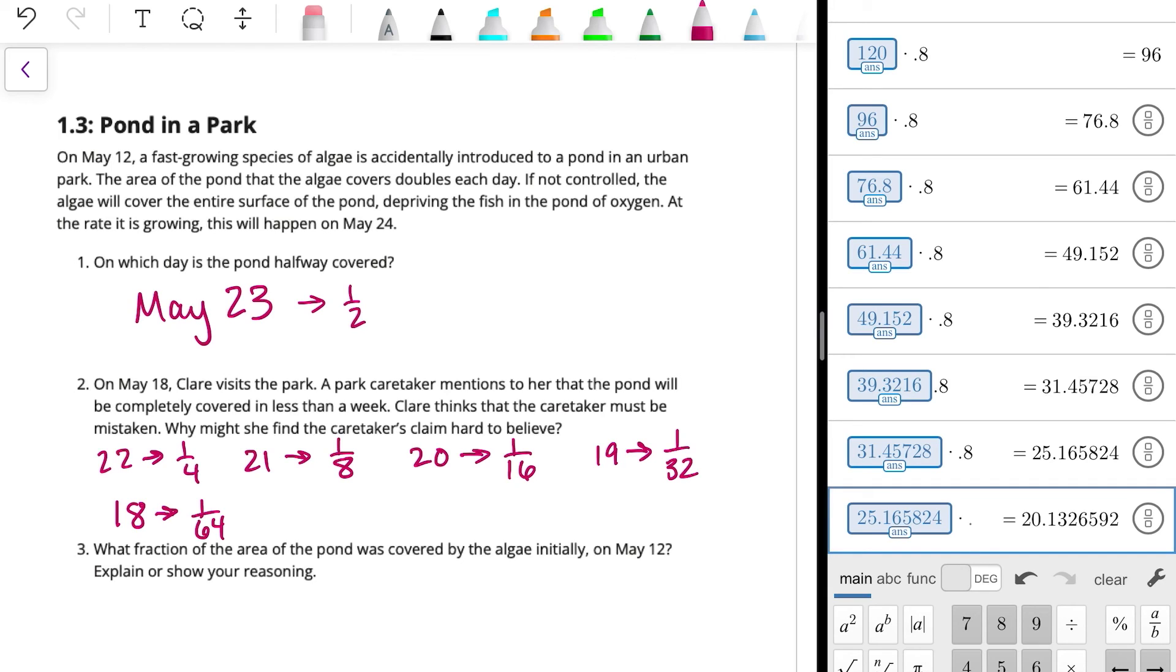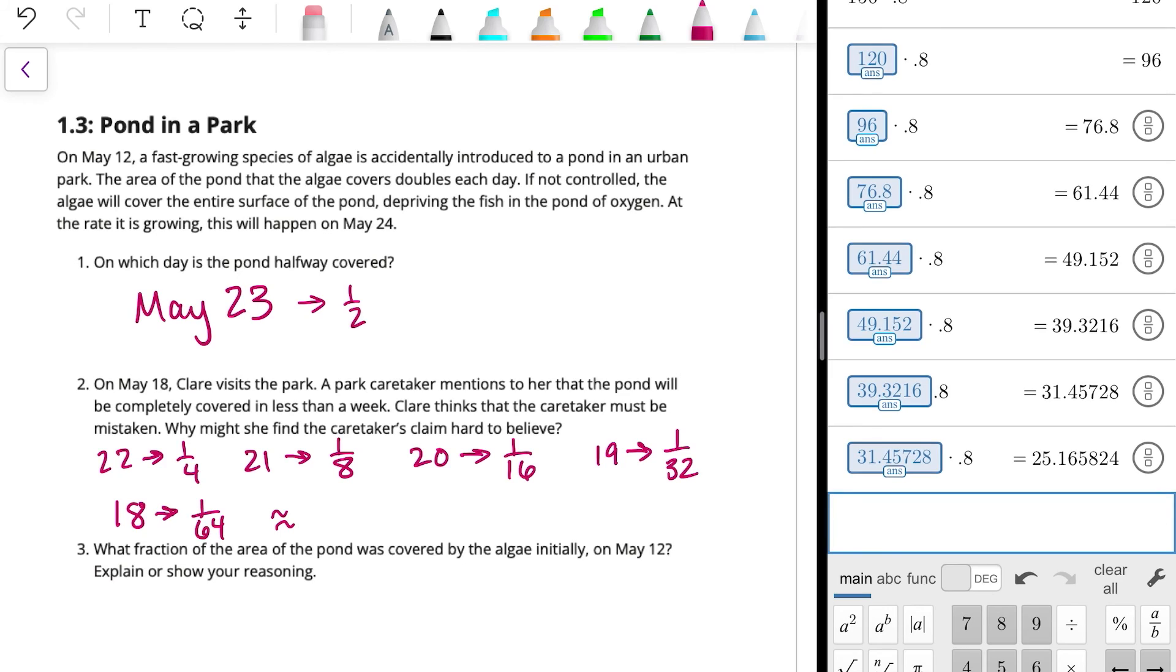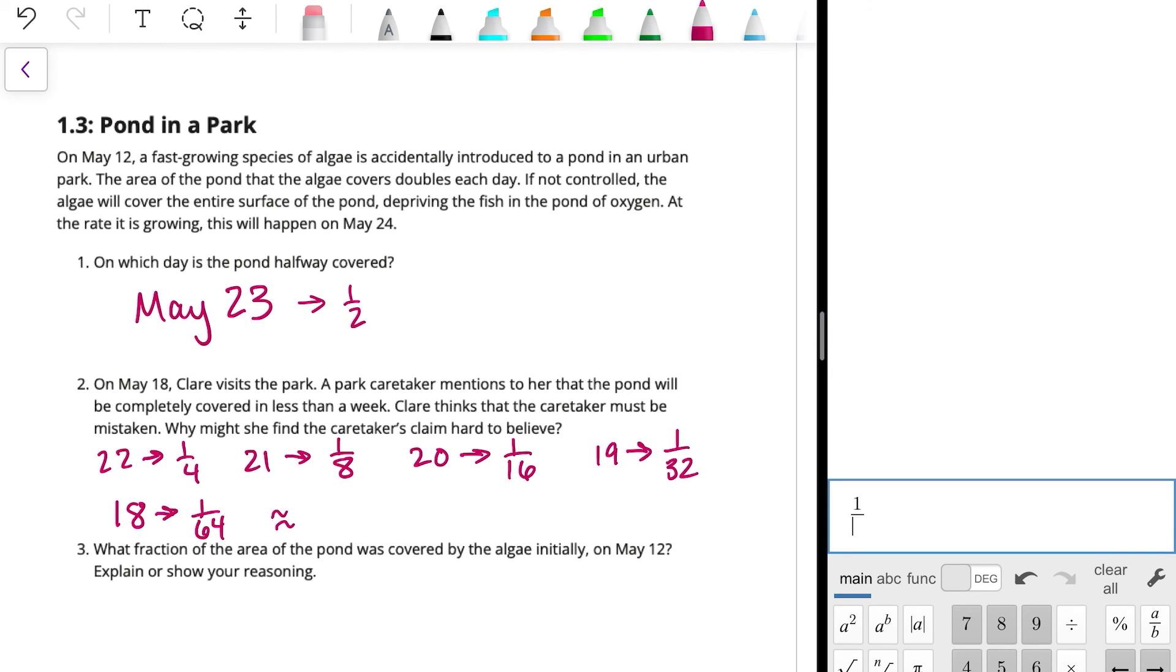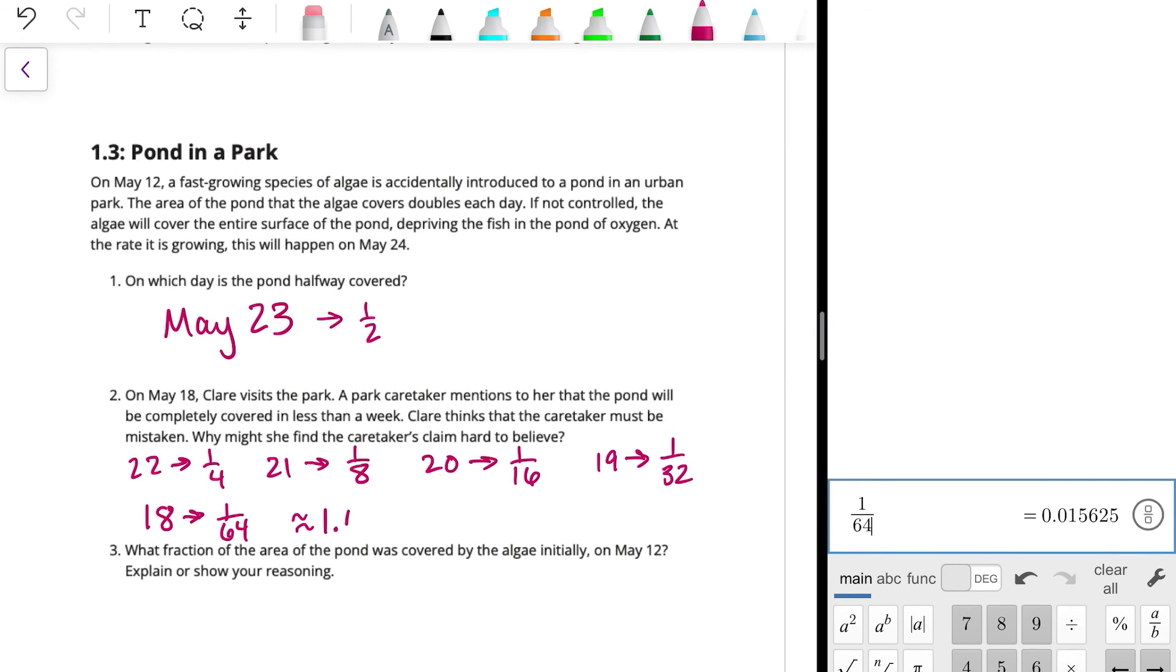And so that's only about, let's see, one divided by sixty-four is about one point six percent. Only one point six percent of the pond is covered at that point. And so she might think, well, that's not much of the pond, so I don't think that's true. Even though it actually would be true.